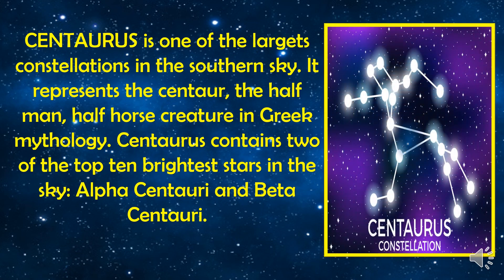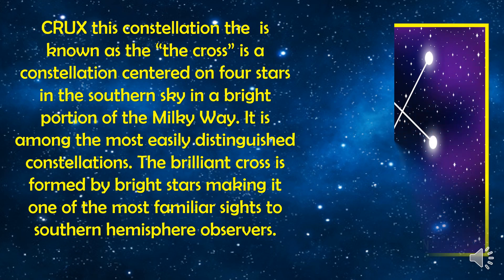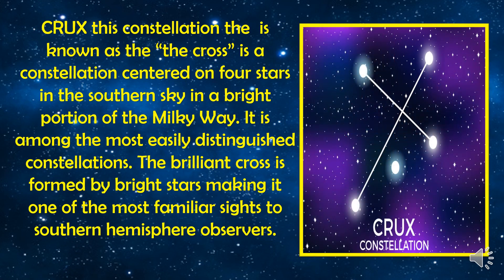Next we have Centaurus. It is one of the largest constellations in the southern sky. It represents the centaur, the half-man, half-horse creature in Greek mythology. Centaurus contains two of the top ten brightest stars in the sky: Alpha Centauri and Beta Centauri. Crux is the constellation known as the Cross. It is centered on four stars in the southern sky in a bright portion of the Milky Way, and is among the most easily distinguished constellations. The brilliant cross is formed by bright stars, making it one of the most familiar sights to southern hemisphere observers.